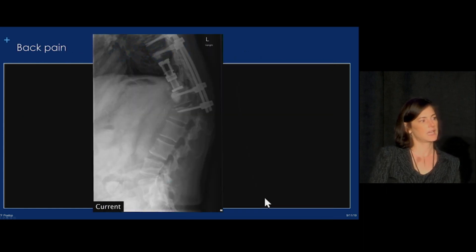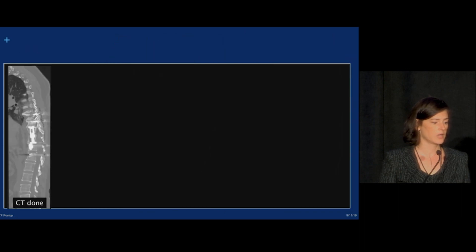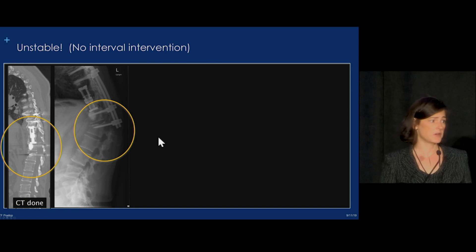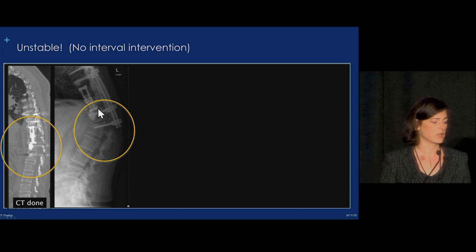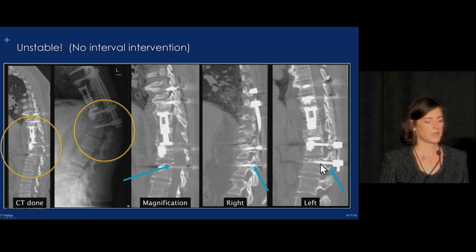Here's another patient with back pain after fusion. There's junctional kyphosis, and looking back at the first study confirms this developed over a six-week interval. On CT, all the hardware is present, but there's a big change in alignment with no interval intervention — indicating a very unstable spine. The CT shows why: a fracture line involving the vertebral body extending along the pedicle and involving the pars interarticularis on both sides. This is a very unstable fracture.